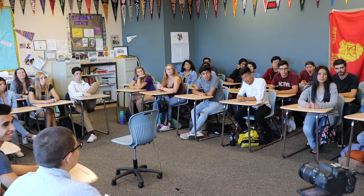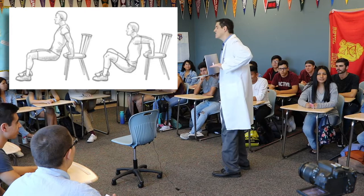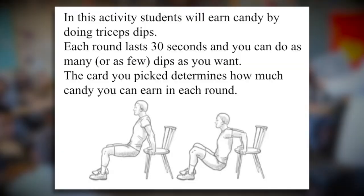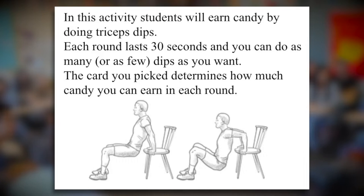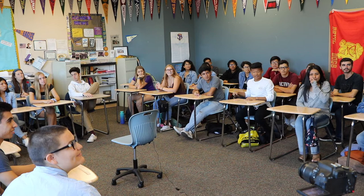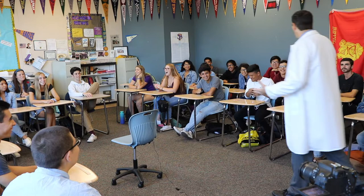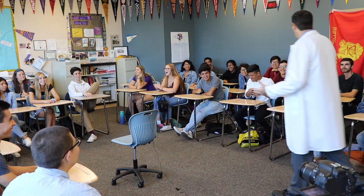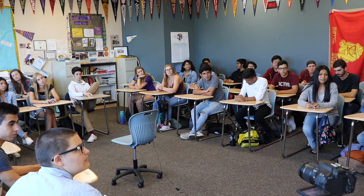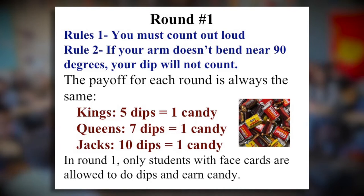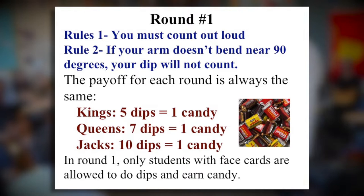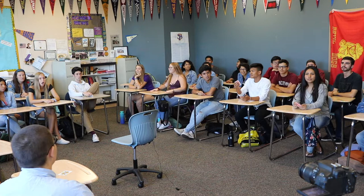Notice you randomly picked your card. Now here's how it works: in this activity you're going to earn candy by doing dips. You get on the chair, go down, arms 90 degrees — it's a tricep workout — arms 90 degrees and then back up. Each round lasts 30 seconds. If your arm doesn't bend 90 degrees it doesn't count. You have to count out loud. The card you picked determines how much candy you can earn. If you have a king, every five dips earns one piece of candy. For a queen, every seven dips earns one candy. For a jack, every ten dips earns one candy. All other cards cannot earn candy in round one.